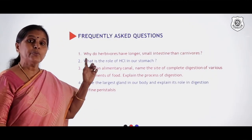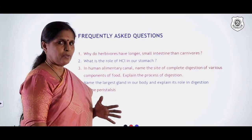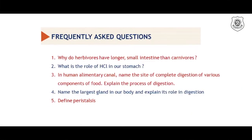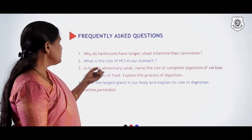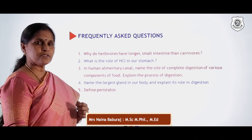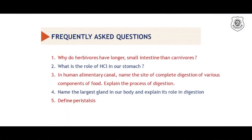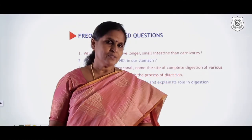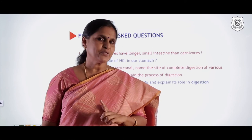These are frequently asked questions from CBSE board papers: Why do herbivores have a longer small intestine than carnivores? What is the role of HCl in our stomach? Name the site of complete digestion in the alimentary canal and explain the digestion of carbohydrate, protein, and fat. Name the largest gland and explain its role in digestion. Define peristalsis. Read your textbook thoroughly, watch the peristalsis video, understand the concepts, and then attempt these questions. Namaste.